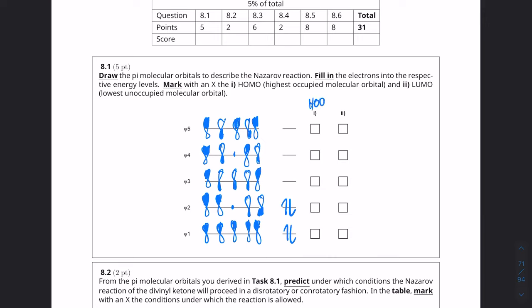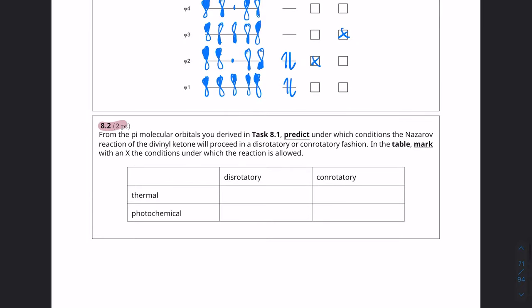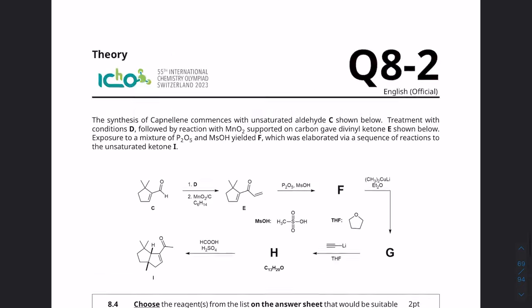And then this is going to be the HOMO number one, and number two is going to be the LUMO. So the HOMO is going to be psi two, and the LUMO is going to be psi three. The name should be pretty self-explanatory. So question 8.2, actually let me scroll up to read the question.